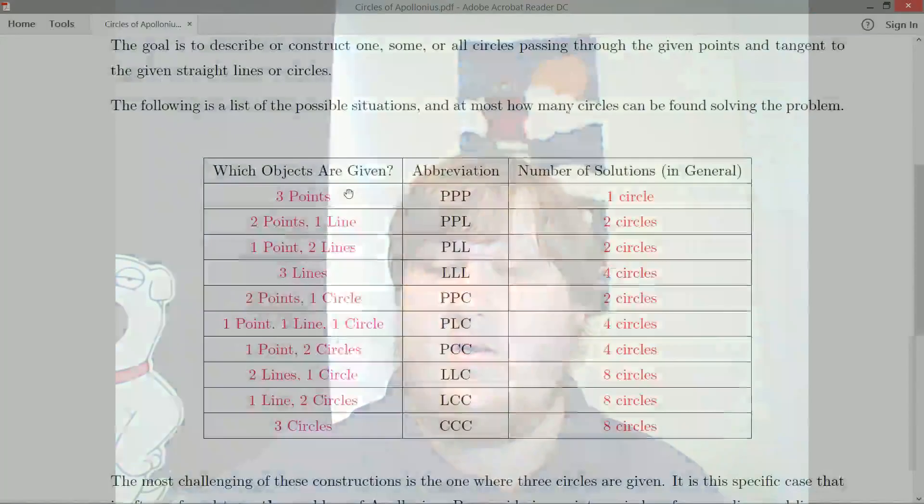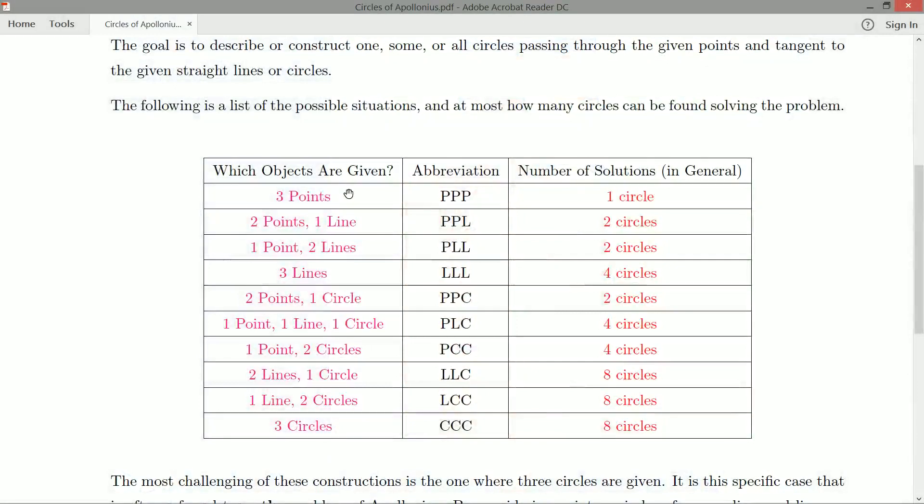But assuming you just have point, point, point, and they just happen to be out there, you can get one circle at most that passes through those three points. And this is not unfamiliar to us. If you connect those points up, you get a triangle, and the circle that you have constructed is just the circumcircle, and I've shown you guys how to do that by straight edge and compass before. So we've already solved the PPP case of the Apollonius problem.